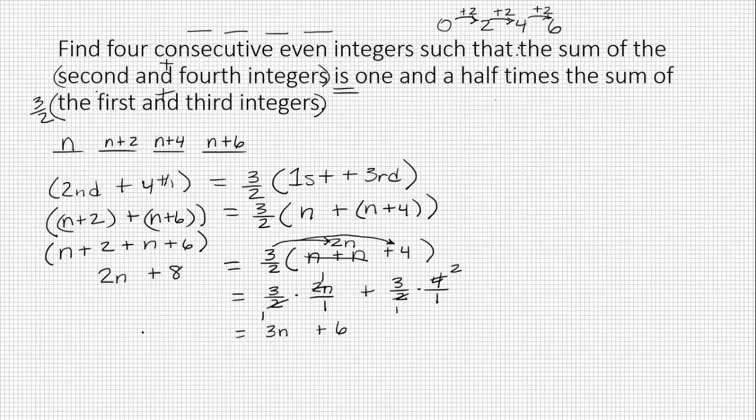That takes care of all the fractions, which is really nice. Now let's solve our equation. You can either subtract two n or you can subtract three n from both sides. I'm going to subtract three n from both sides. So I've got negative one n left plus eight. And that's zero. I've got six.